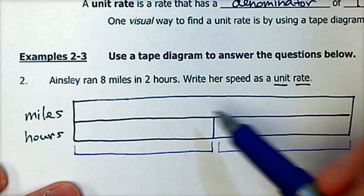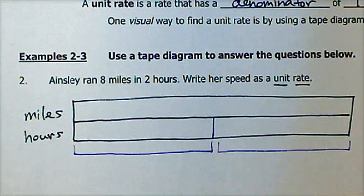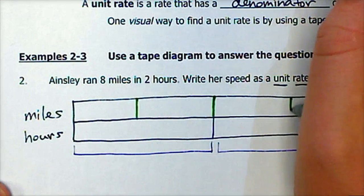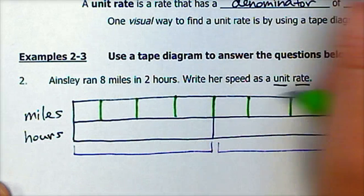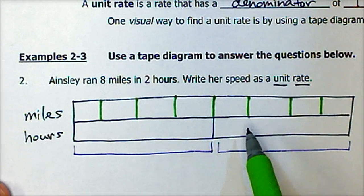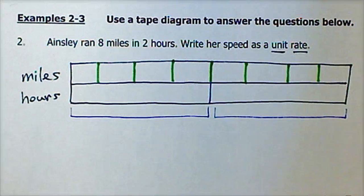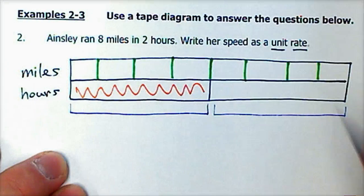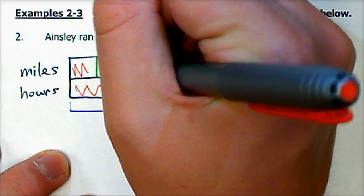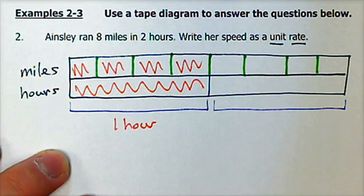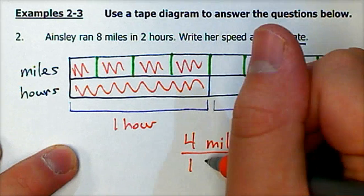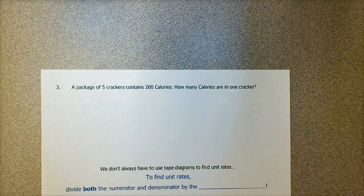I'll do the same for the top rectangle representing miles, splitting it into eight pieces: two, four, and eight. Each box on top represents one mile, and each box on the bottom represents one hour. To write this as a unit rate, I count how many miles correspond to one hour on the tape diagram — she ran one, two, three, and four miles. So the unit rate is four miles per one hour.